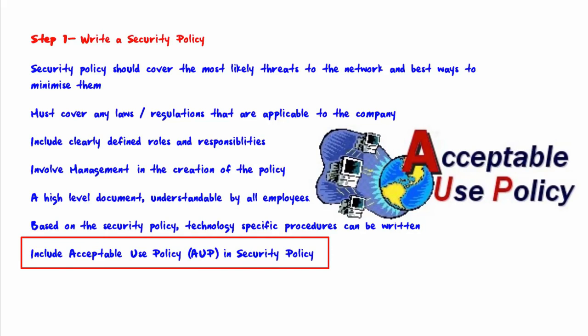Lastly, you want to make sure to include an Acceptable Use Policy (AUP) in the security policy. An acceptable use policy is very specific, indicating to end users exactly what they are allowed to do on the network and what they're not allowed to do. For example, they might be allowed to use the internet for personal purposes, or maybe they're not. Likewise with email — are they allowed to use email for personal purposes, or maybe only outside of their shift?